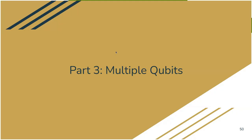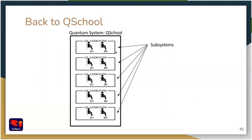The last part is about multiple qubits. So far we were focusing on single qubits, considering a single classroom as our quantum system. But we said in part one that we can consider the whole Q School as one quantum system. In that case, the Q School would be our quantum system and the classrooms would be subsystems of the Q School. Each subsystem is a qubit, so we have one system composed of multiple qubits.